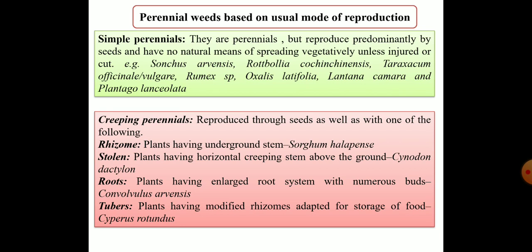Perennial weeds classified by usual mode of reproduction have three categories. The first is simple perennials — remember 'simple as for seed' — these are perennials reproduced predominantly by seeds and have no natural means of spreading vegetatively unless injured or cut. Examples include Sonchus arvensis, Rohdea cochinchinensis, Taraxacum officinale, Taraxacum vulgare, Rumex species, Oxalis latifolia, Lantana camara, and Plantago lanceolata.